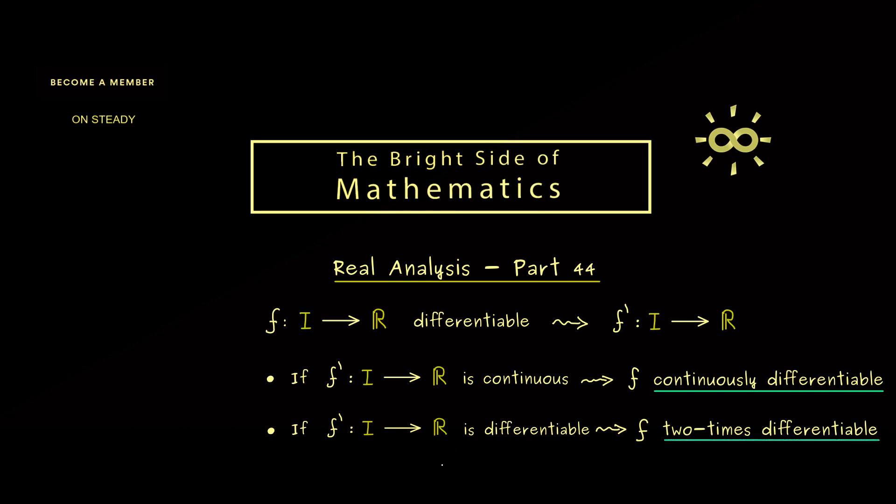Therefore if the function has this property we get the derivative of the derivative, so f'', and usually one denotes that without the parentheses. Now you might already see we can go even further and look at 3 times differentiable, 4 times differentiable and so on. Therefore for higher derivatives you wouldn't use the primes anymore. But we would use an upper index where we put the corresponding number in parentheses.